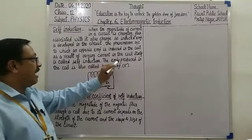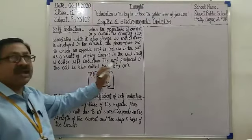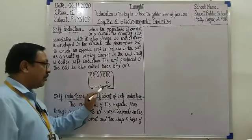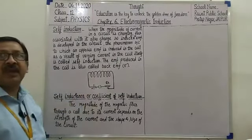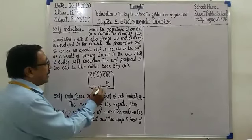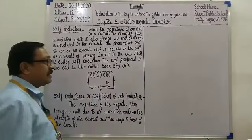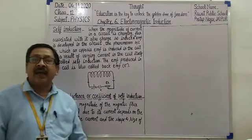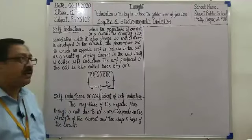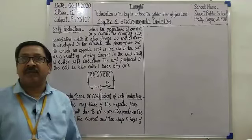The EMF produced in the coil is also called back EMF. Here I have a coil connected to a battery. According to Faraday's law, if we have a coil in which the magnetic flux changes, then an induced EMF will be produced.